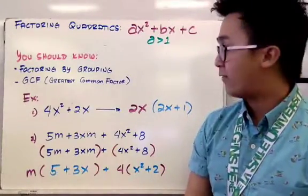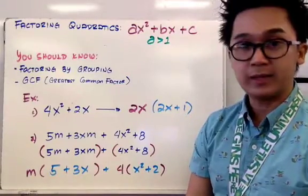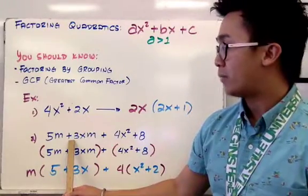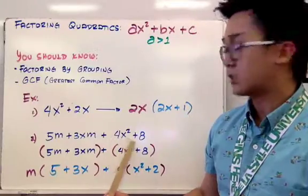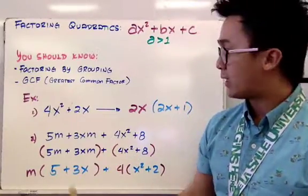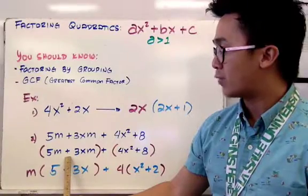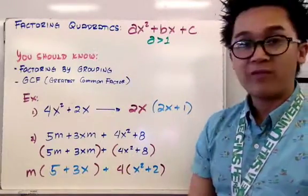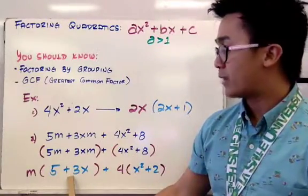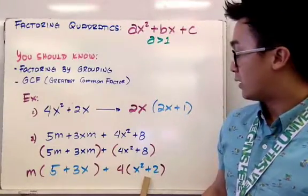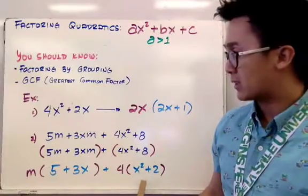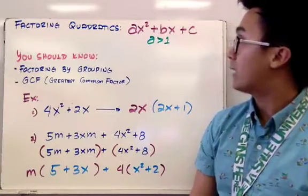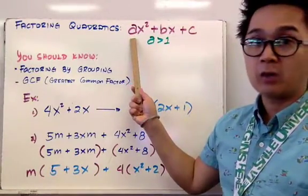For example two, we have 5m plus 3xm plus 4x squared plus 8. This is factoring by grouping: group 5m plus 3xm, and group 4x squared plus 8. The common factor for the first group is m, and for the second group it's 4, leaving (5 plus 3x) and (x squared plus 2). These two techniques will be used in our lesson today for factoring quadratics when the leading coefficient is no longer 1.